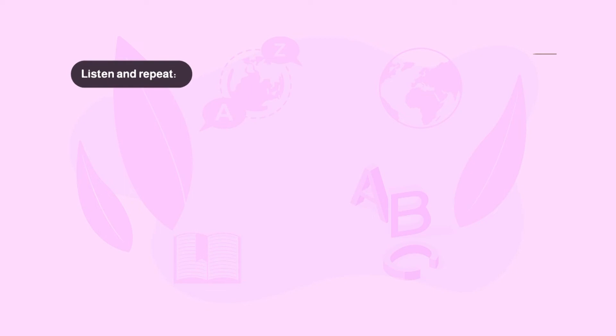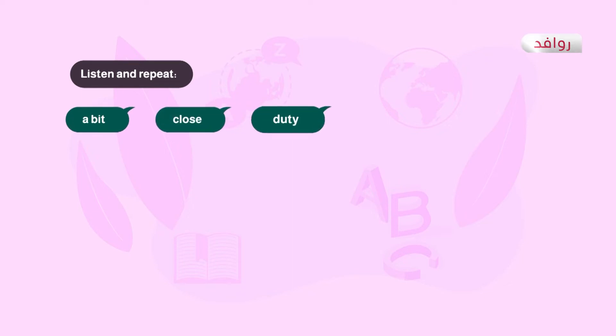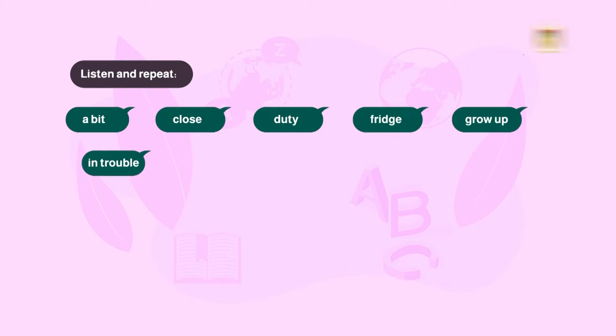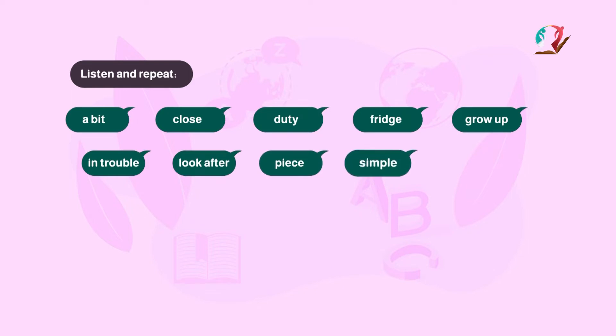خلونا بالأول listen and repeat. نشوف عنا مجموعة من الكلمات، نستمع إلهم ونكررهم. وبعد ما نستمع إلهم راح نتعرف إلى المعاني باللغة العربية. الكلمات هي: a bit, close, duty, fridge, grow up, in trouble, look after, peace, simple, though, thanks.